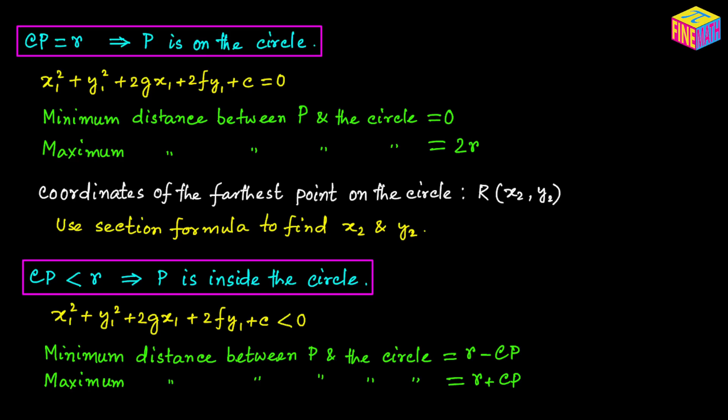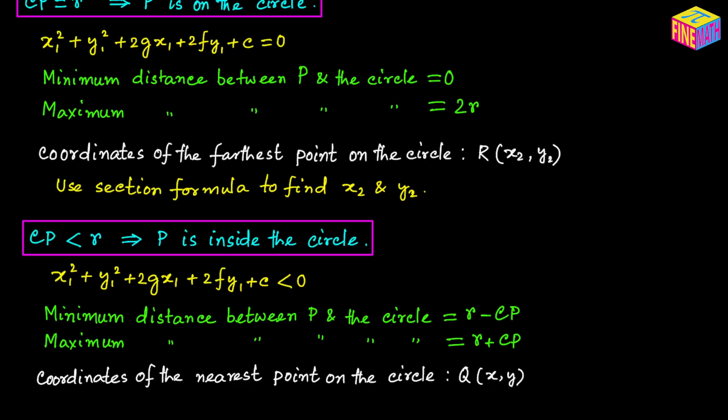To find the coordinates of the nearest point on the circle (point Q, with coordinates (x, y)), we can use the section formula. We know the CP distance, the radius, and thus the PQ distance. We also know the coordinates of P and C, so the section formula gives us the coordinates of Q.